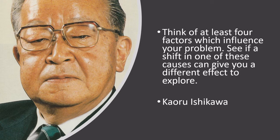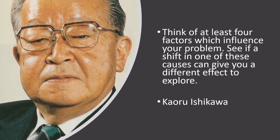Ishikawa advises: think of at least four factors which influence your problem, and see if a shift in one of these causes can give you a different effect to explore. With the creation of this strategy, he's really challenging you to not just think there's one problem and one solution, but that there could be multiple factors influencing it. Make sure you're honing in first on the priority factor, but see the opportunity in all other factors as a means of continuous improvement.